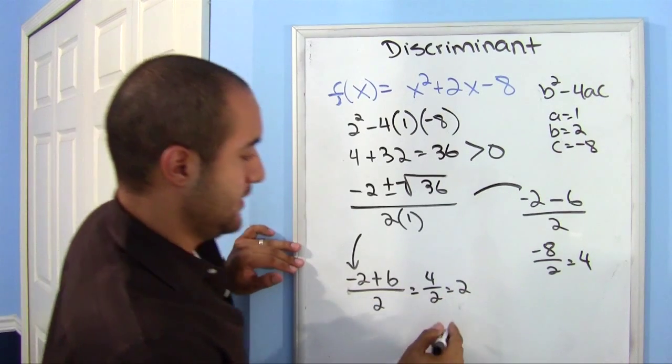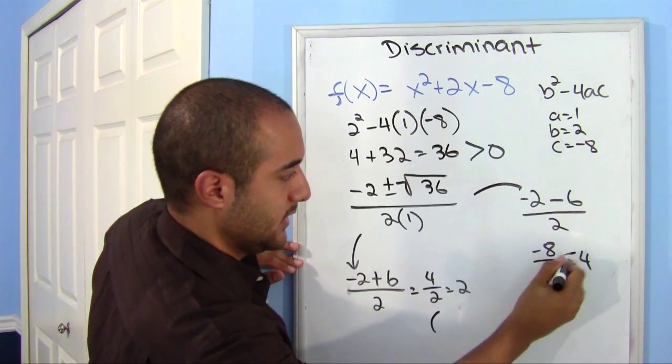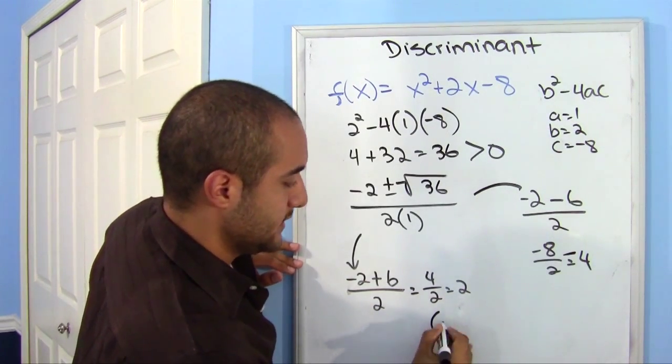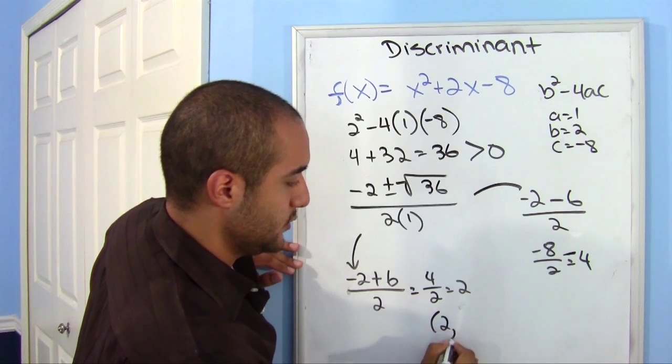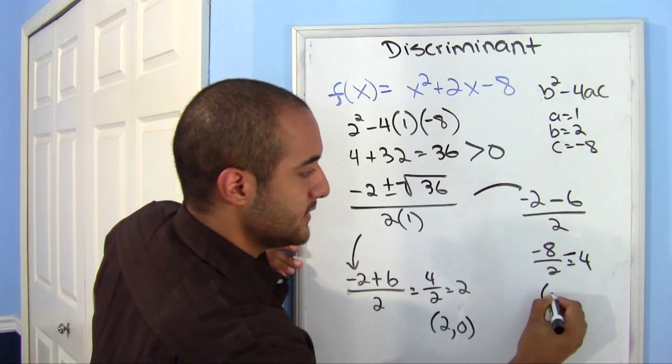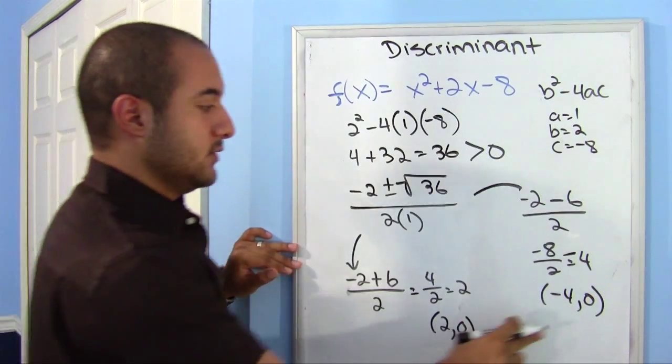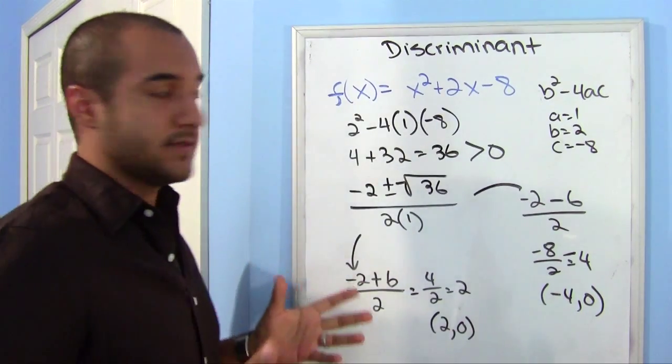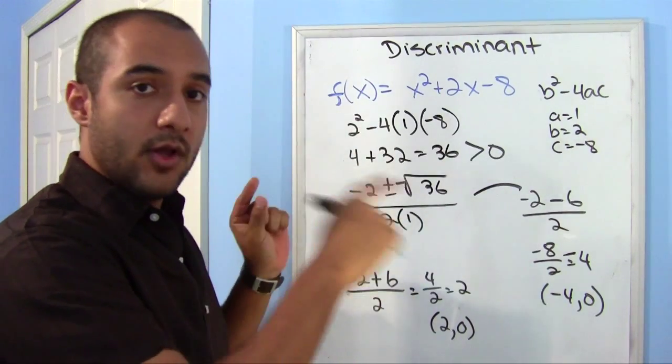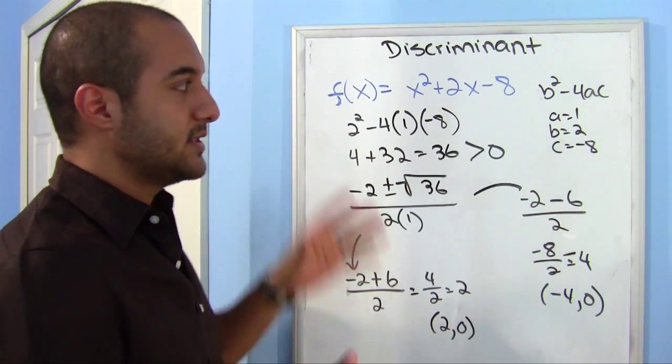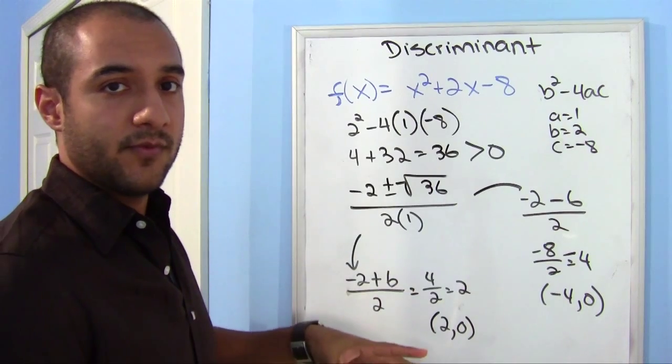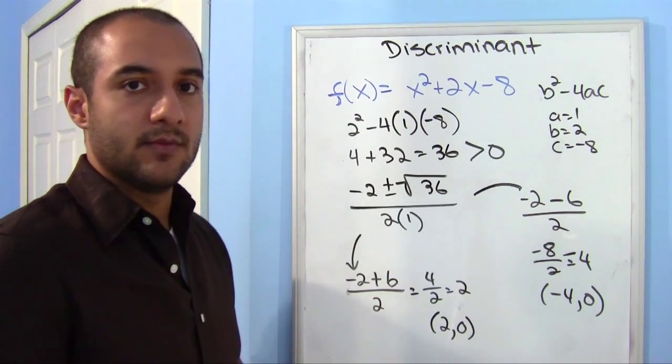So these are the spots where it crosses the x-axis. This is 2, 0, and this is negative 4, 0. Those are the two spots where it crosses the x-axis, and it'll help you go ahead and graph things more exact, especially if your vertex is far away from the x-axis, this will make it more exact.